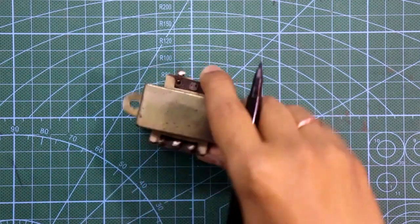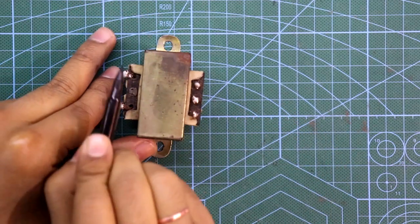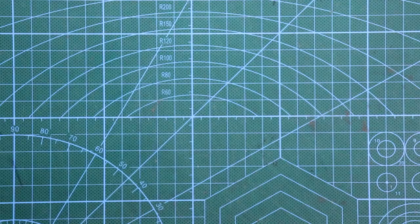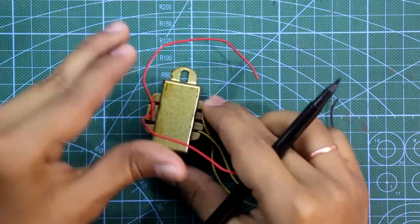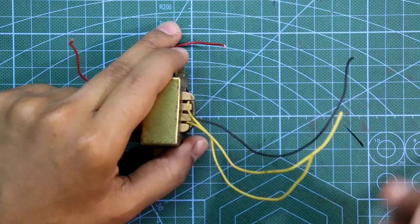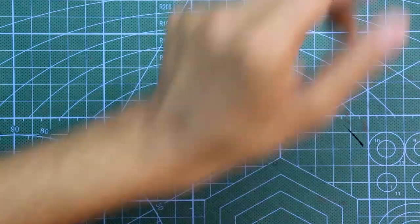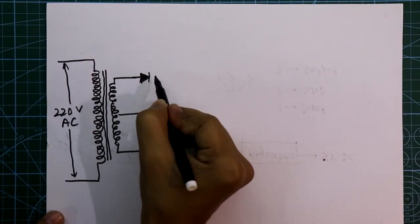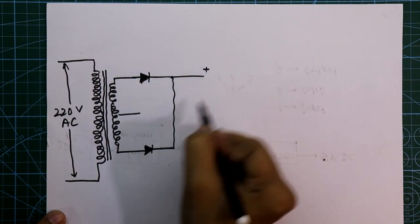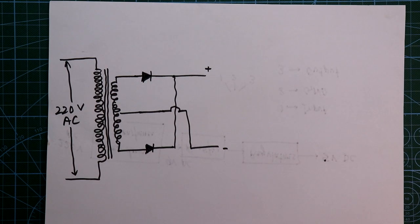If your transformer is center tapped, that is like this - this side is input AC and this side is output AC, or like this where these two are AC and these three are output AC, this is center tapped. At this condition we need only two diodes. This is positive and the middle is negative and the rest of the circuit will be same as before.